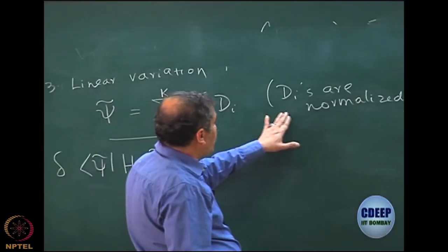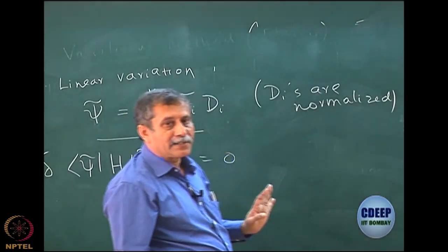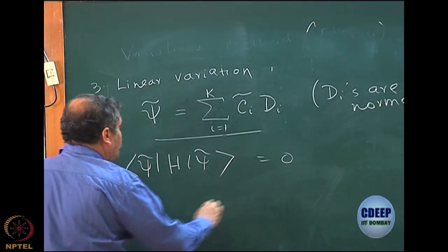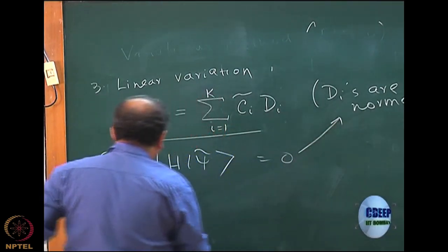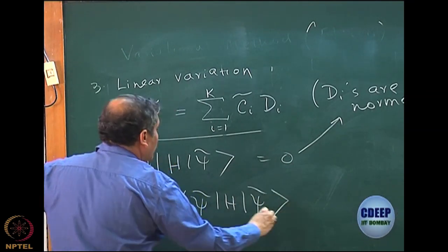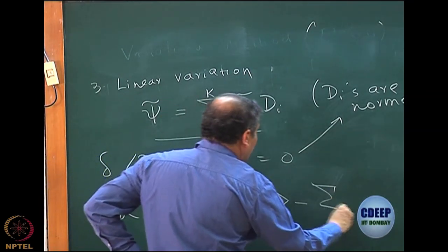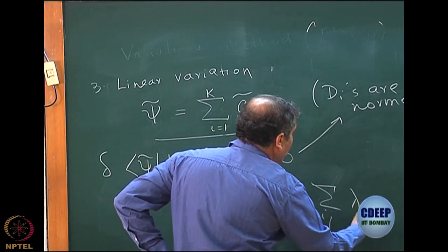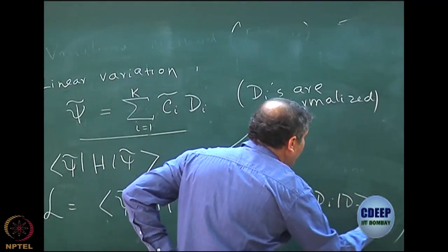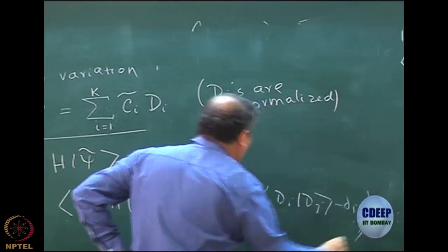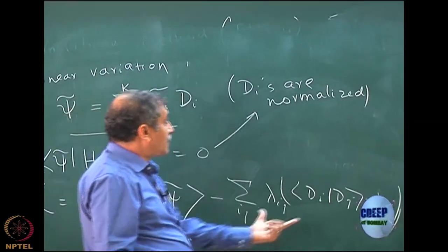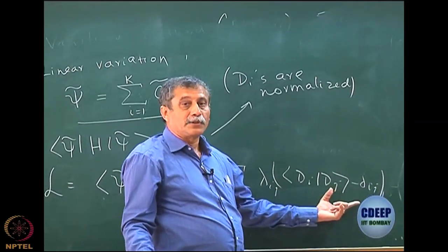So let us write down the Lagrangian subject to this condition. The Lagrangian will be the average value minus a sum over ij of lambda_ij times (d_i|d_j minus delta_ij). This is the variation under constraint — I am varying this under the condition that d_i|d_j minus delta_ij should be 0. I think I have done this many times. So this is what I am actually going to vary.